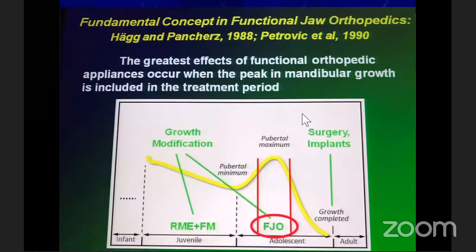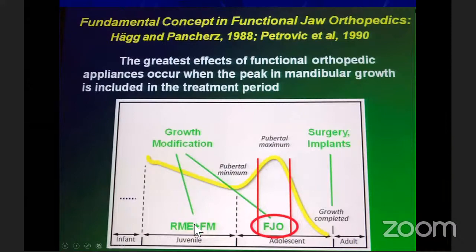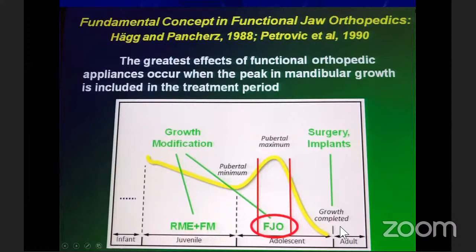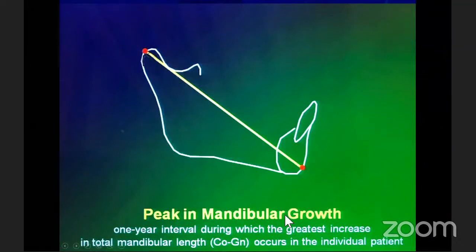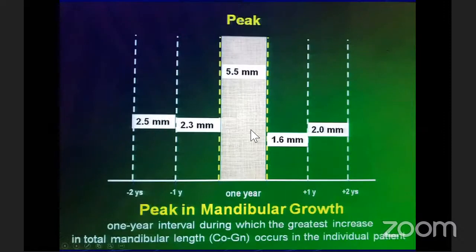One of the greatest effects of functional orthopedic appliances occurs when the peak in mandibular growth is included in the treatment period. The pre-pubertal stage is very good for rapid palatal expansion, or for Class 3 cases using a face mask. The pubertal growth spurt is best utilized during growth modification with functional appliances. And we should also know when growth is over for placing implants or for orthognathic surgery. The greatest effects of functional orthopedic appliances occur when the peak in mandibular growth is included in the treatment period.